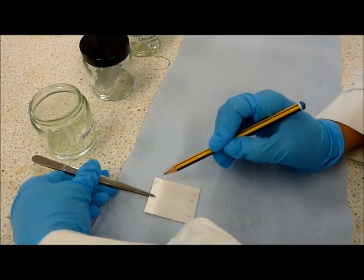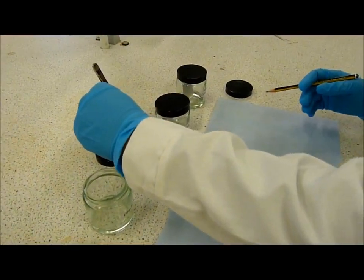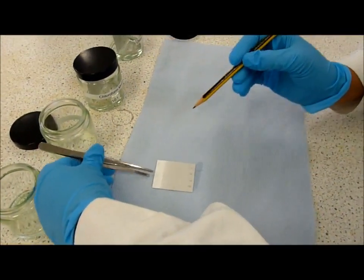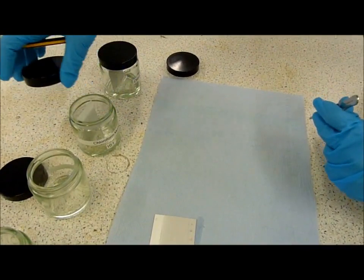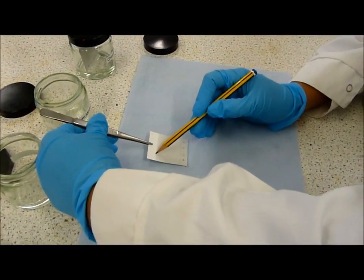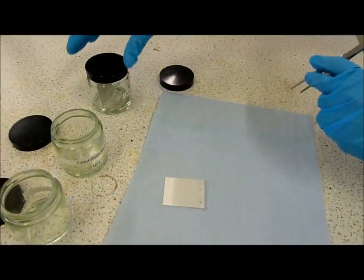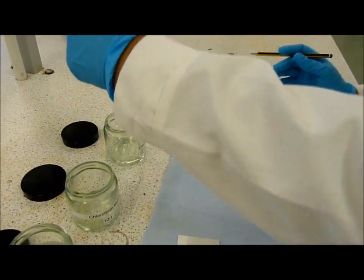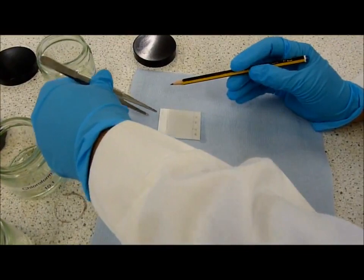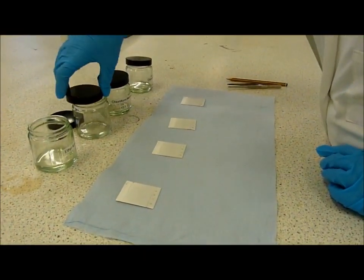Draw a pencil line very gently at the top of the solvent front. Replace the lids on the mobile phase and allow the solvent to evaporate from the plate.